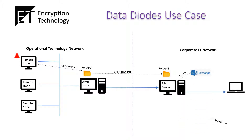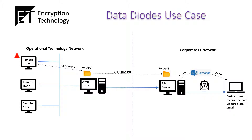The file server in the corporate IT network then sends the file as an email attachment to the business users on the email mailing list. This all seems good,